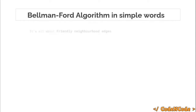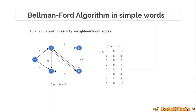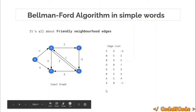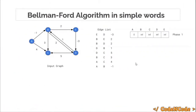Bellman-Ford is one of those algorithms where storing the graph as an edge list is better than any other form, because we are going to traverse the edges one by one in n minus 1 phases. We have the input graph, the edge list (just a list of all edges), and a distance array representing the distance of all nodes from the source node, which is assumed to be node A here.